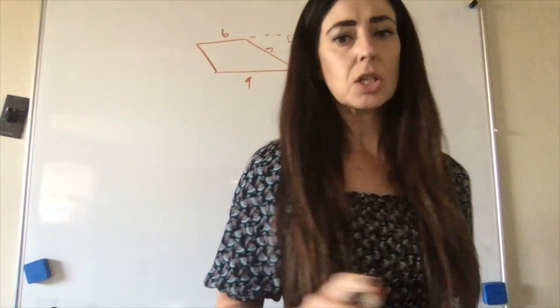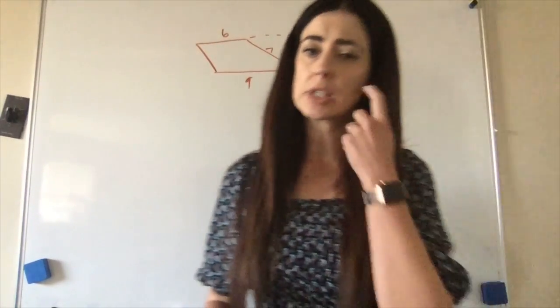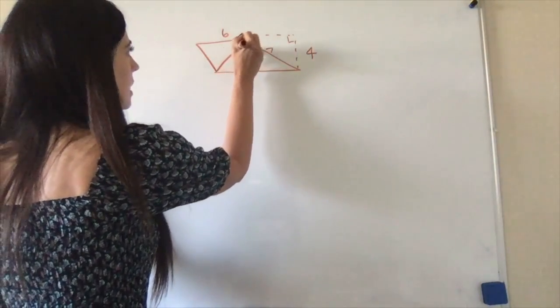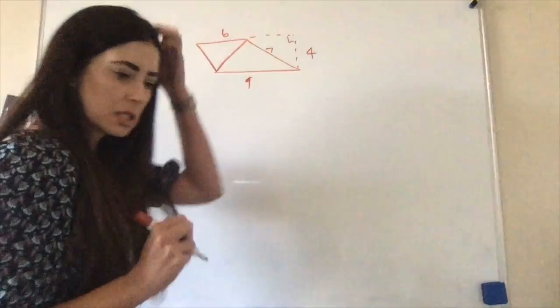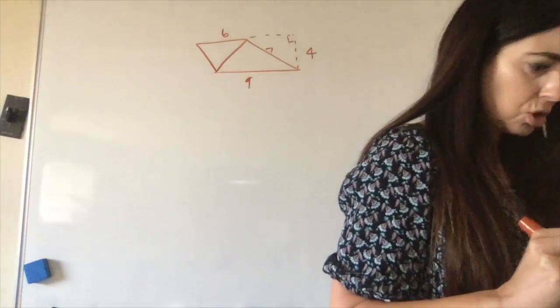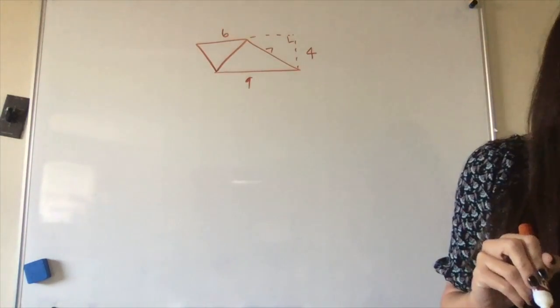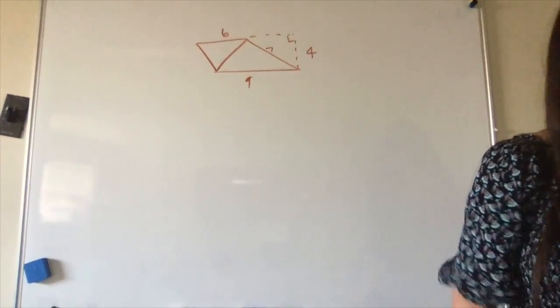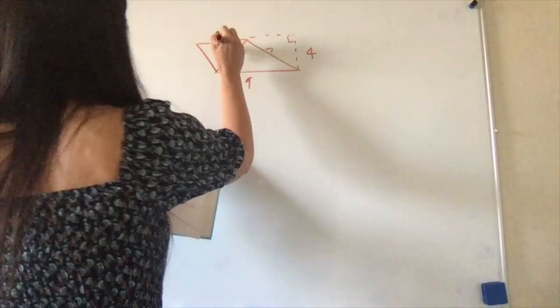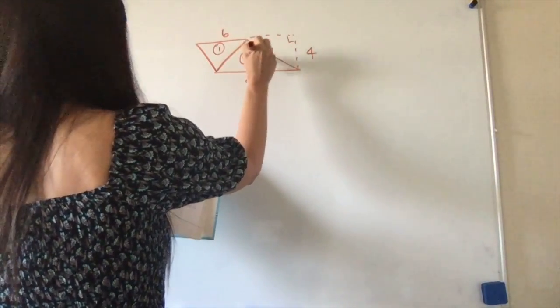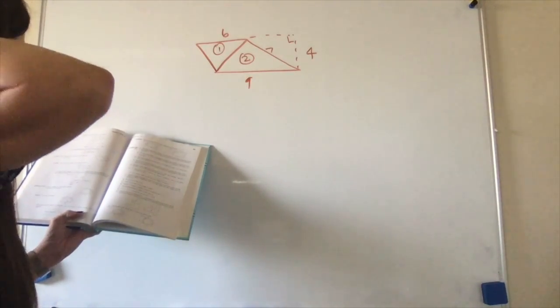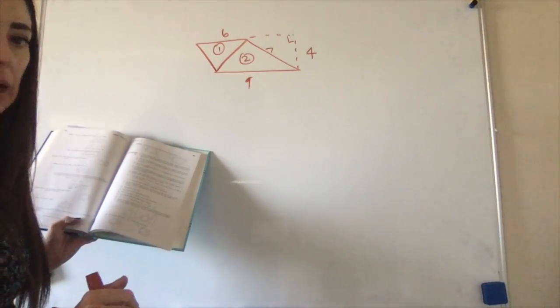So to solve for trapezoids, we have to cut it into two triangles. So we're going to look at this, and we're going to say, I'm going to cut it into these two triangles. So I'm going to find the area of triangle 1, and I'm going to find the area of triangle 2. And I know the area of triangle 1 plus the area of triangle 2 is going to give me the total area.